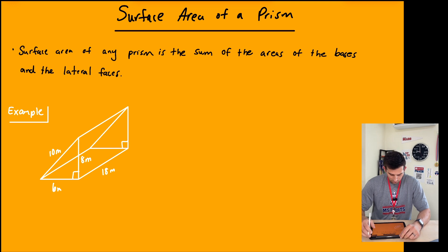Let's take a look at this example. We have two bases here that are triangles, so let's find the area of those first. The area equals one half base times height. Our base is six, so one half times six, and our height is eight.